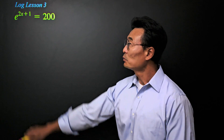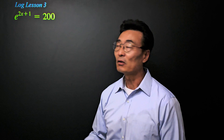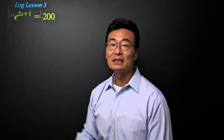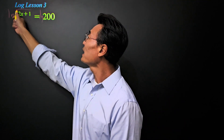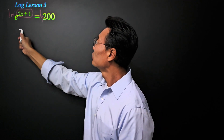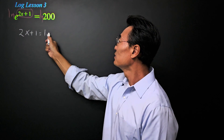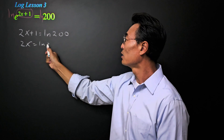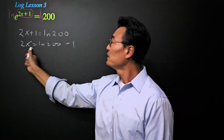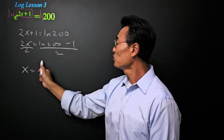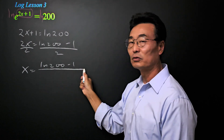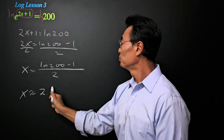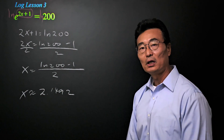This time, we have an exponential equation where the base is e. Whenever the base is e, you do not want to take the log — rather, you want to take the natural log of the left and the right side of the equal sign. Natural log and e cancel out, meaning we only have the exponent by itself on the left side. So we have 2x plus one equals natural log of 200. Continuing to solve for x, we subtract one, so we get 2x equals natural log of 200 minus one, all over two. If you put that in the calculator, it'll come out to 2.1492, rounded to four decimal places.